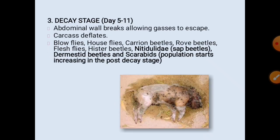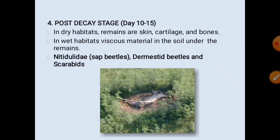The decaying stage lasts five to eleven days: the abdominal wall breaks, allowing gases to escape, and the carcass deflates. Insects present include blow flies, house flies, carrion beetles, rove beetles, flesh flies, hister beetles, Nitidulidae sap feeders, dermestid beetles, and scarabs — with these latter populations starting to increase. The post-decay stage (day 10–15): in dry habitats, remains are skin, cartilage, and bones; in wet habitats, a viscous material is present in the soil. Nitidulidae sap feeders, dermestid beetles, and scarabs are found at this stage.